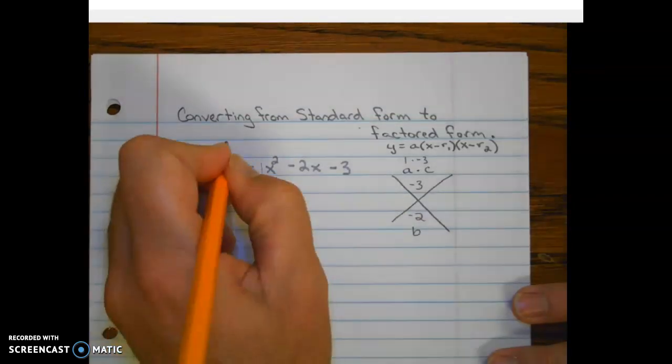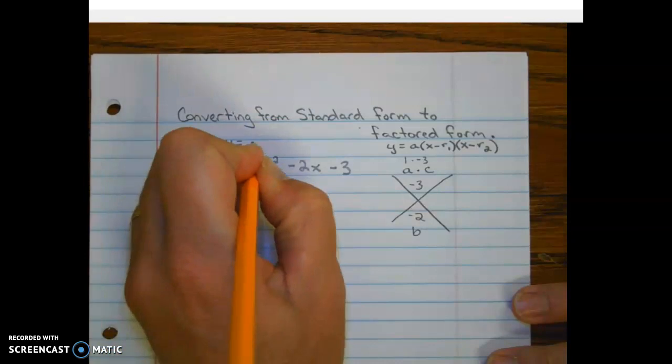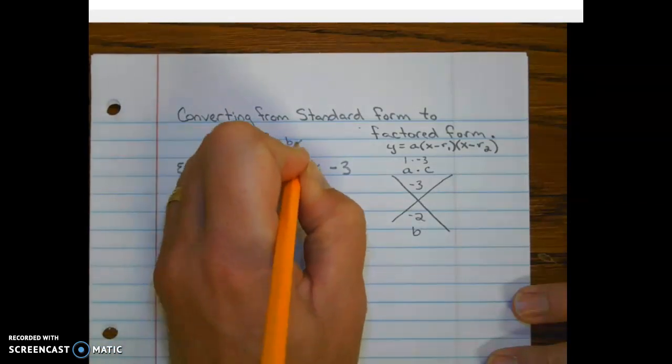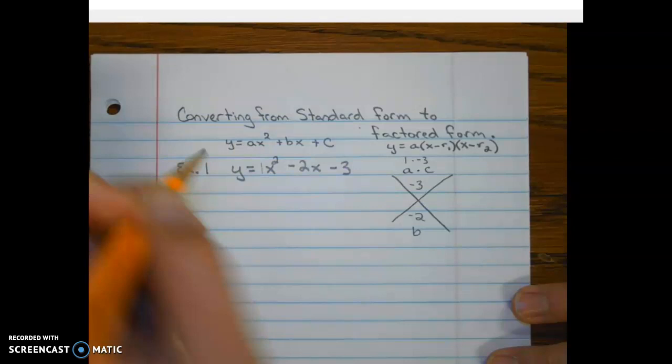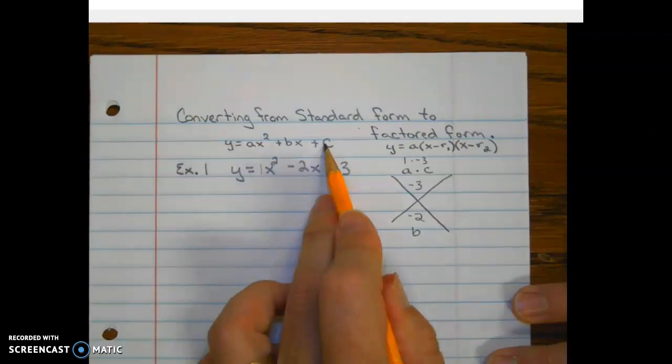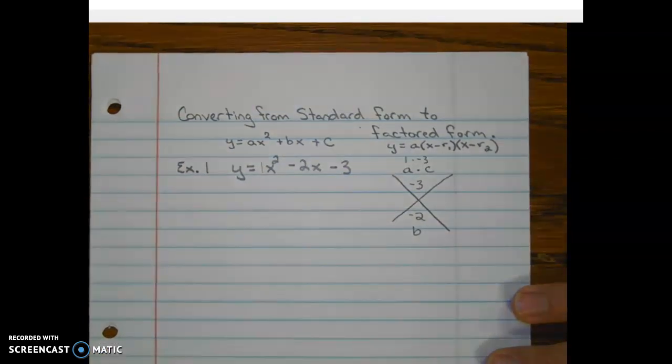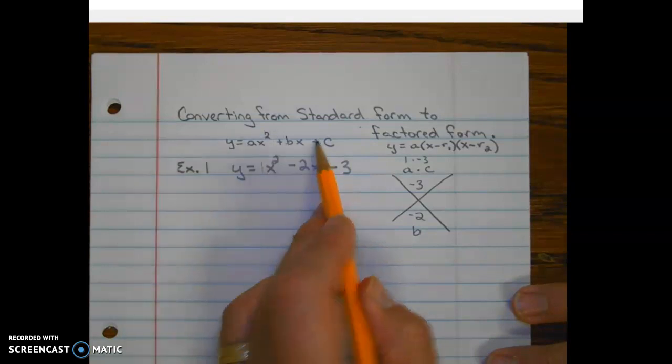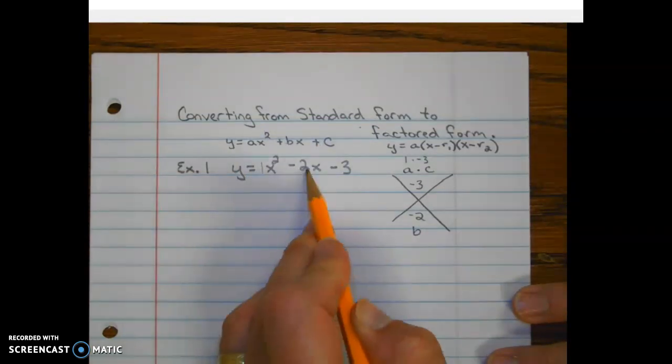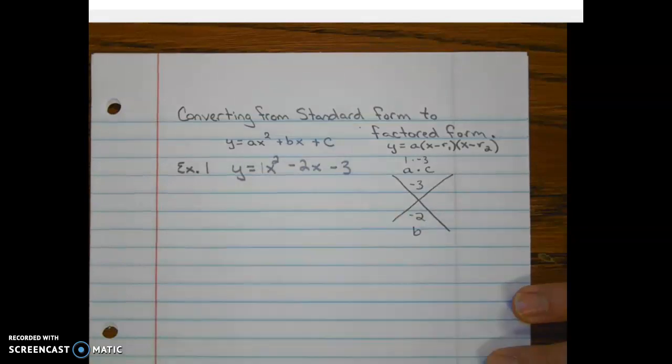Remember, standard form is set up like this: Ax squared plus Bx plus C. And that's where I'm getting the A, B, and C from. And those represent the coefficients on the variables and the constant on the end.